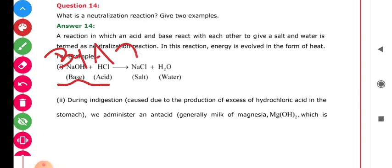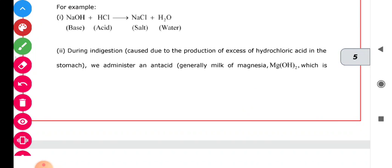If we need to give an example, the first example is here: NaOH (sodium hydroxide) plus HCl (hydrochloric acid). When this base and acid react with each other, they form common salt NaCl and water. The reaction between acid and base to give us salt and water is termed as neutralization reaction. In this reaction, energy is evolved in the form of heat, and some amount of heat is also released during the reaction.